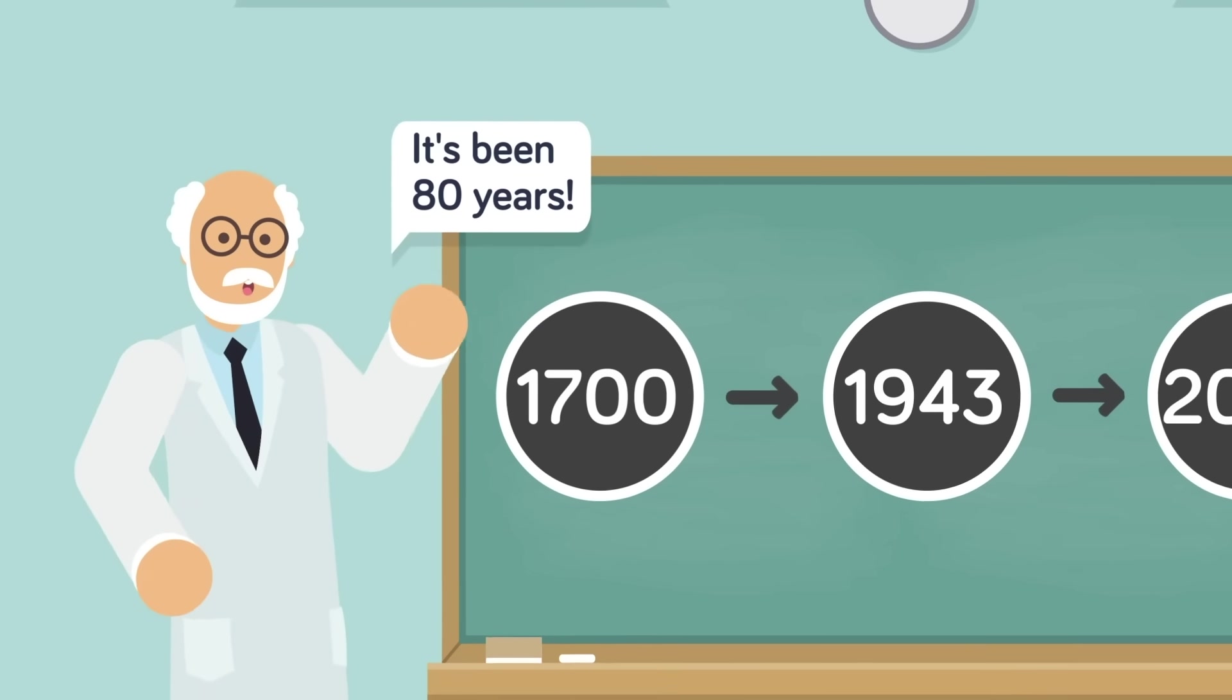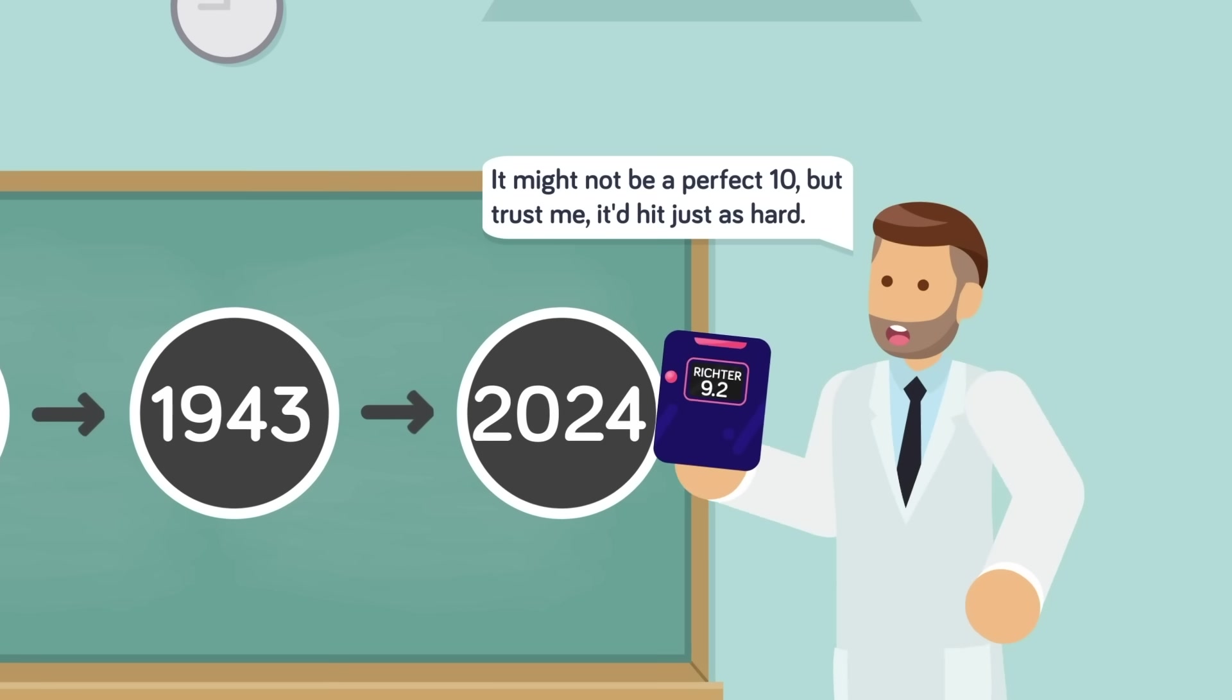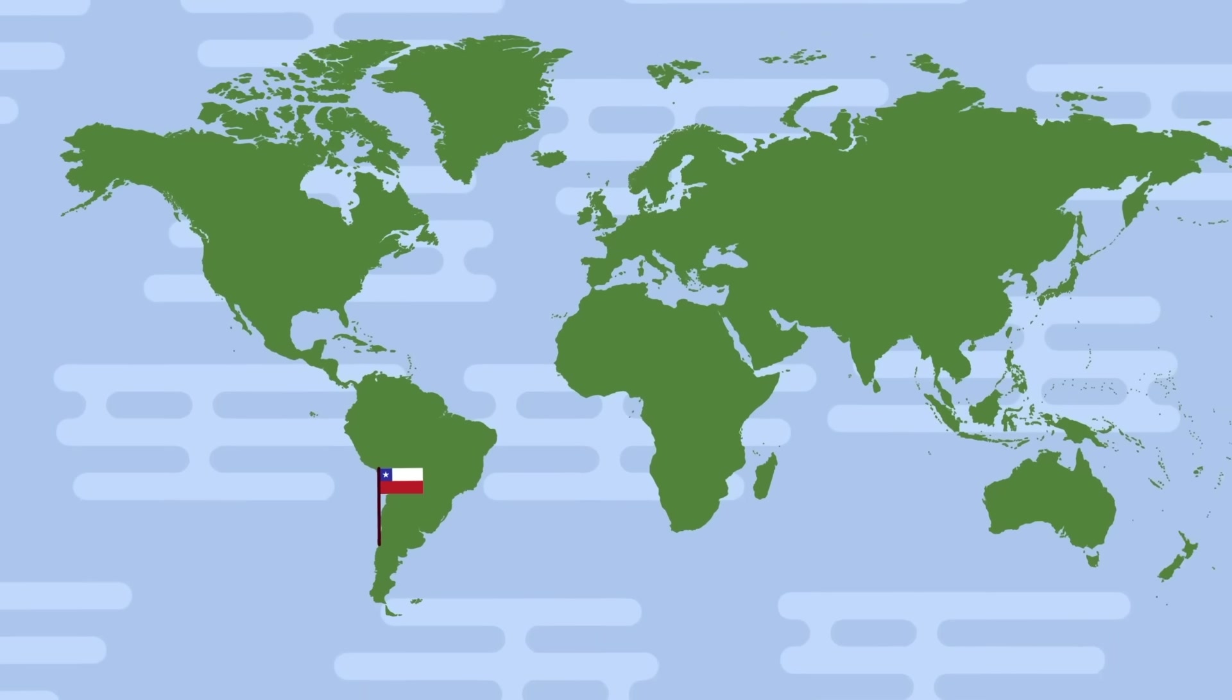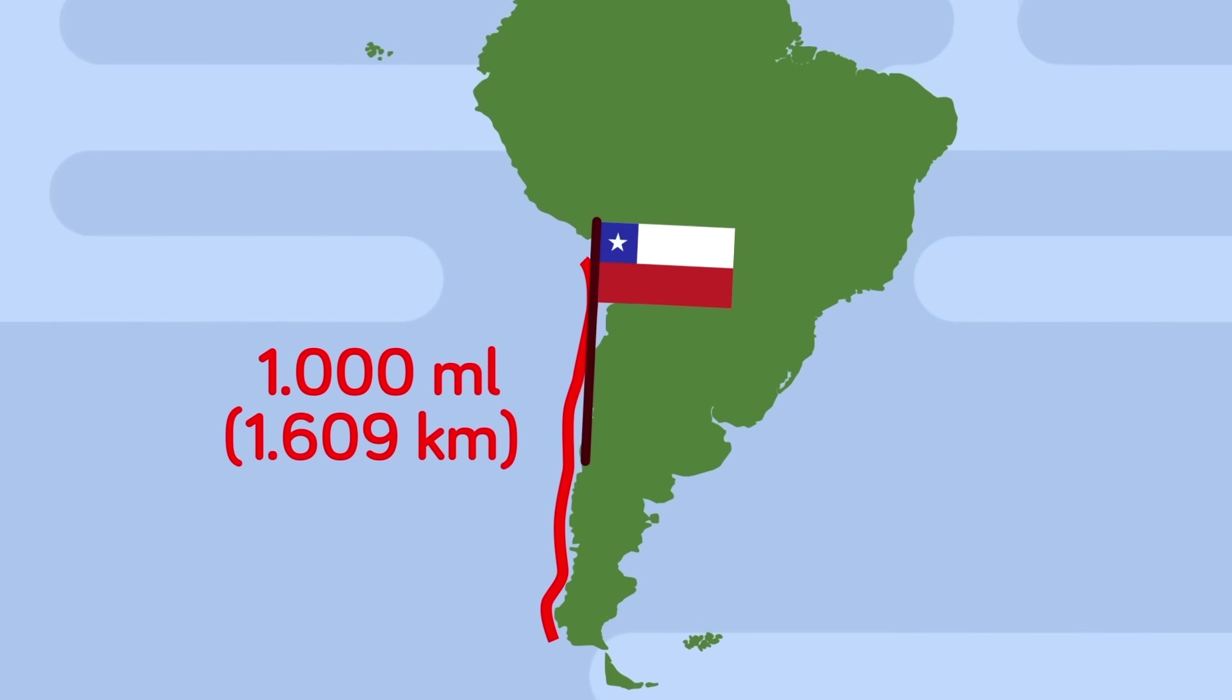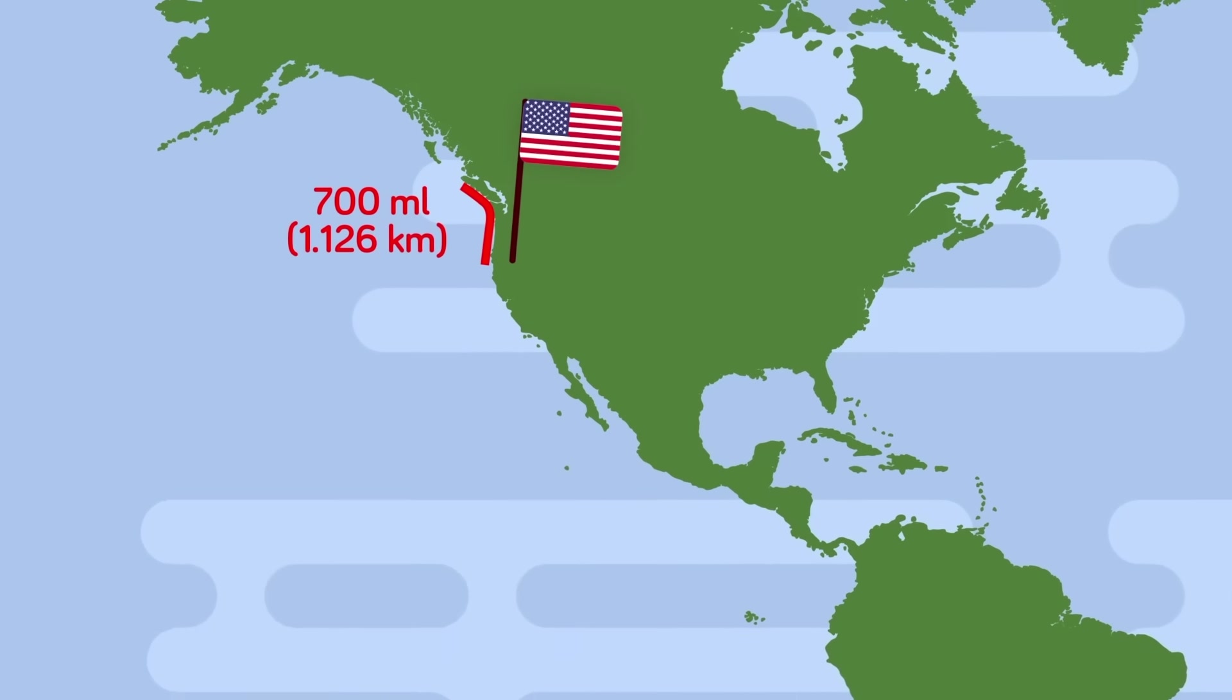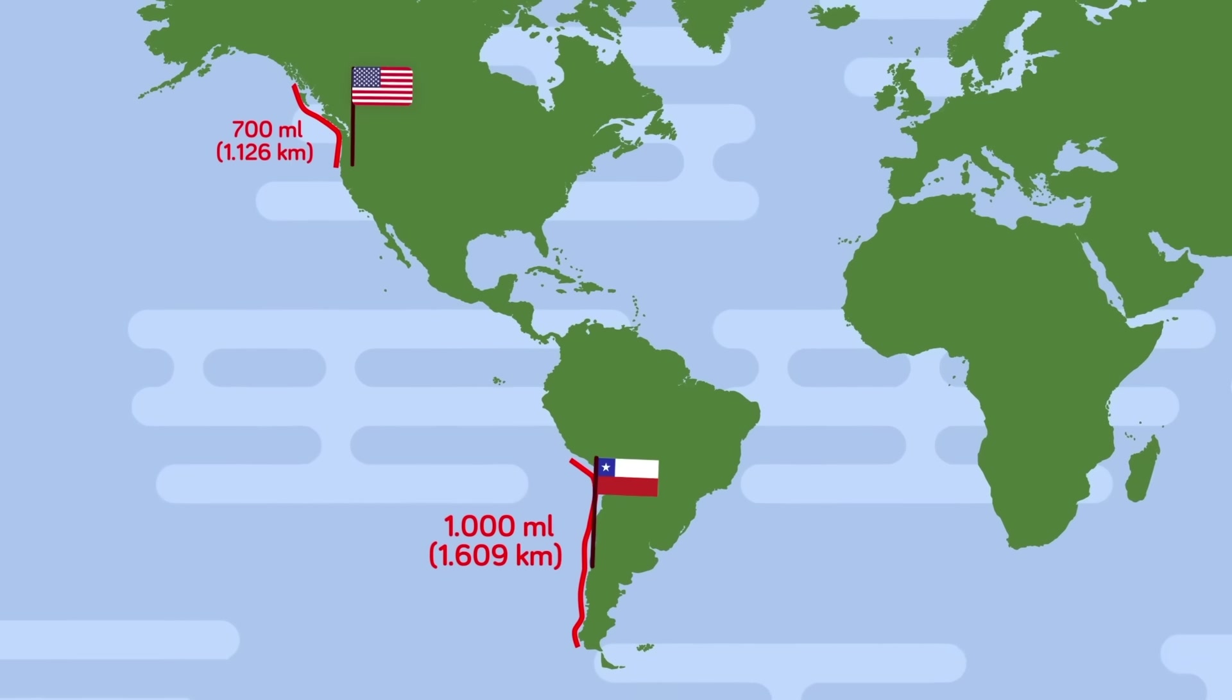As for the good news, most scientists think that a subduction earthquake in this area would probably not pass a 9.2 on the Richter scale. The 9.5 scale earthquake in Chile happened on a fault line over 1,000 miles long, while the Cascadia fault line is around 700 miles. So at least an earthquake here won't be a world-ending catastrophe, just a regional one.